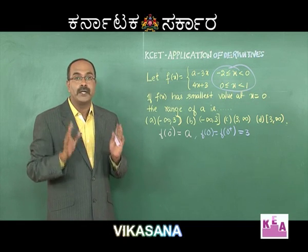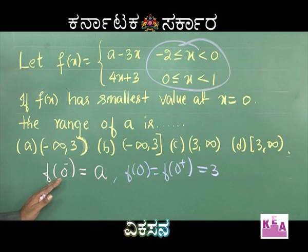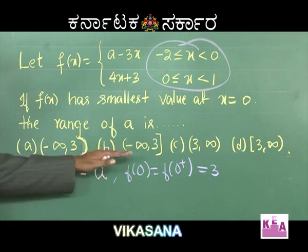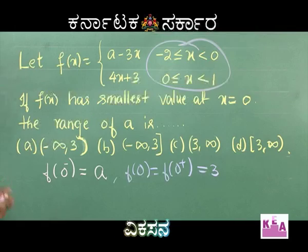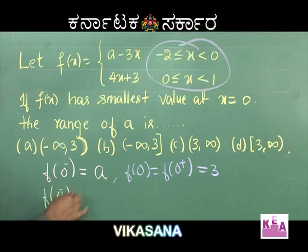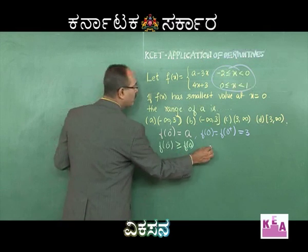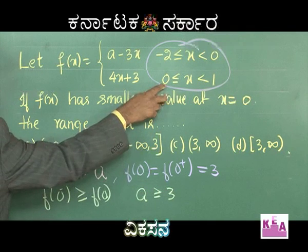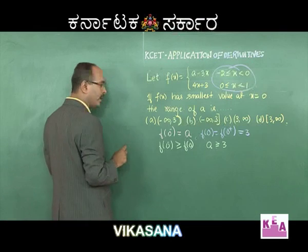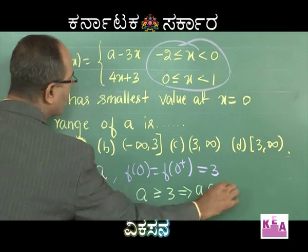f(x) has smallest value at x = 0 means f(0⁻) must be greater than or equal to f(0). f(0⁻) must be greater than or equal to f(0) because f(0) is smallest. As f(0) is smallest, f(0⁻) must be greater than or equal to f(0).